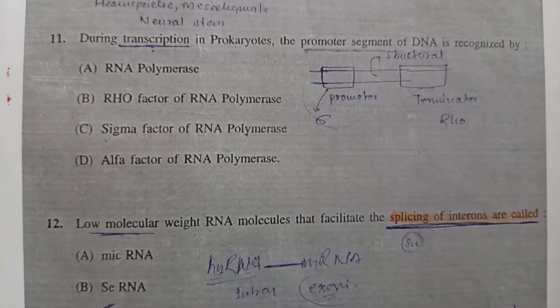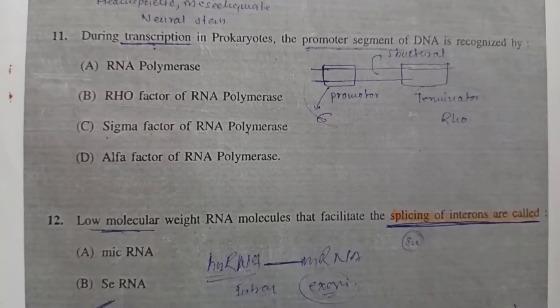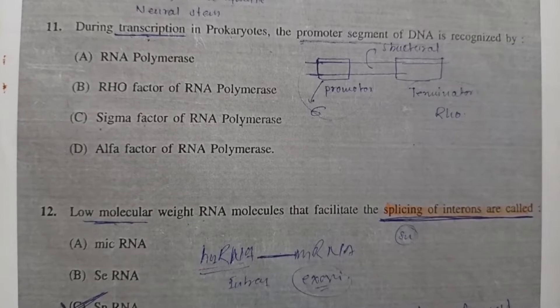Question 11: During transcription in prokaryotes, the promoter segment of DNA is recognized by - Option C, sigma factor of RNA polymerase, is the correct answer.